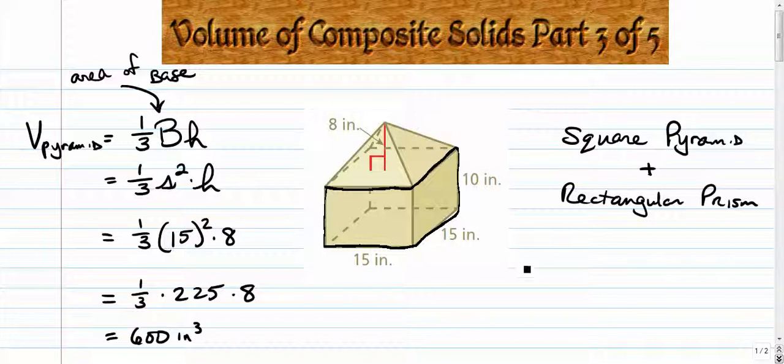So let's go and find this. We have volume of the prism is about as easy as it gets. Length times width times height. So it's 15 times 15 times 10, which is 225 times 10, which is 2250 cubic inches.